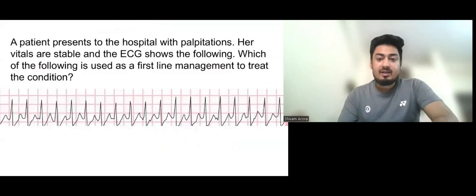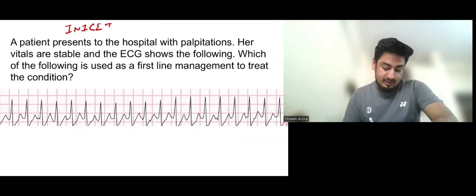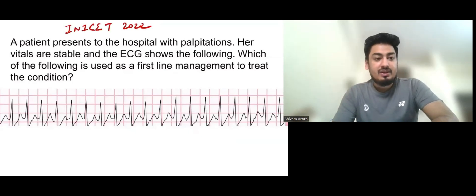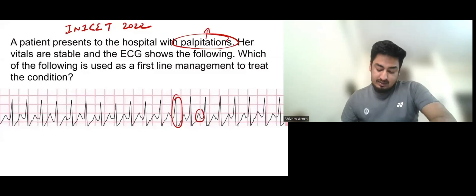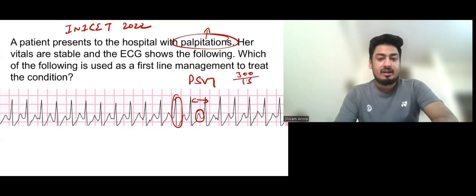This is the second question from INICET 2022. A patient presents to the hospital with palpitations. Her vitals are stable and the ECG shows the following. Which of the following is used as the first line management to treat the condition? The patient presents with palpitations. Now the ECG is showing: this is a QRS, this is a T wave, so P wave is somewhere inside the QRS. This is the ECG of PSVT.